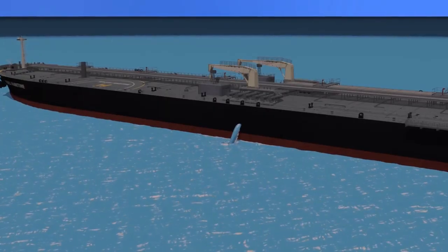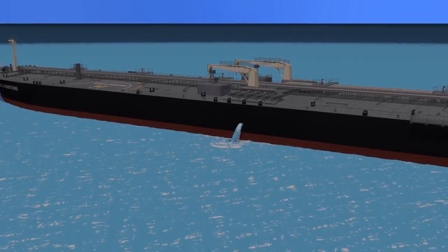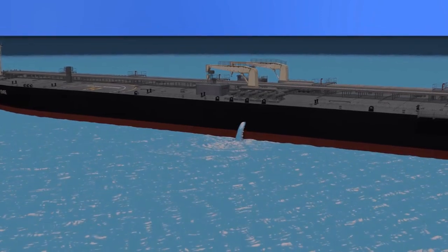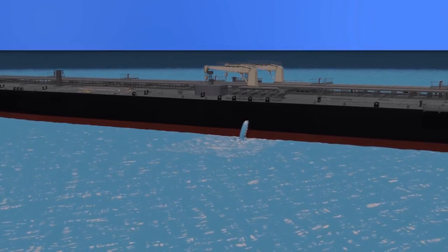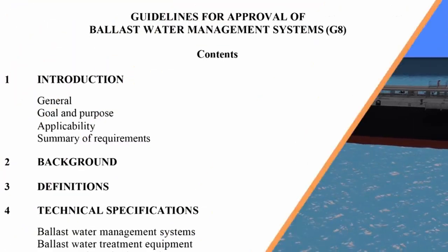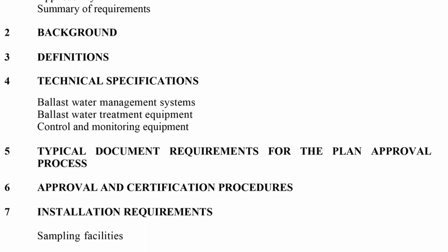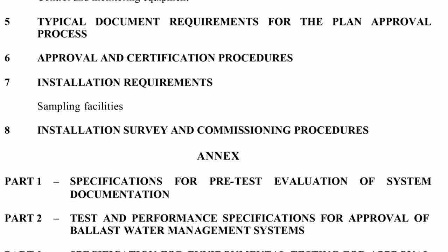A ballast water management system intended for compliance with the D2 Performance Standard must be of a type approved by IMO. This is done in a similar way to other types of equipment mandated for use on board a ship. The G8 Guidelines for Approval of Ballast Water Management Systems describes the process manufacturers must go through in order to obtain type approval.